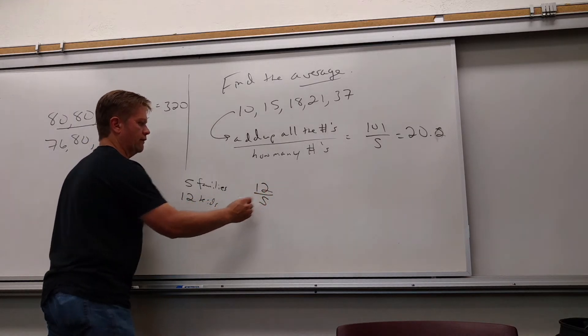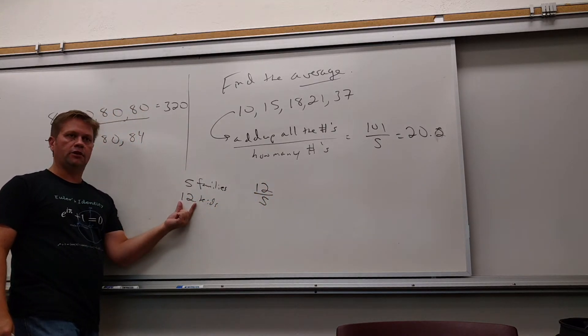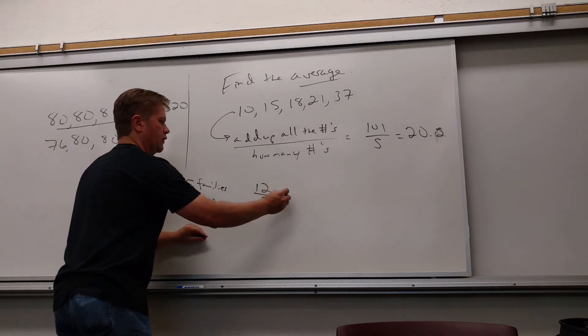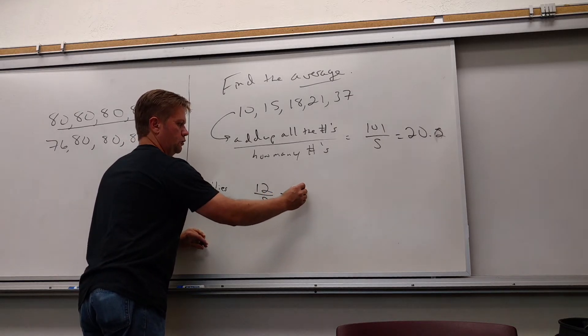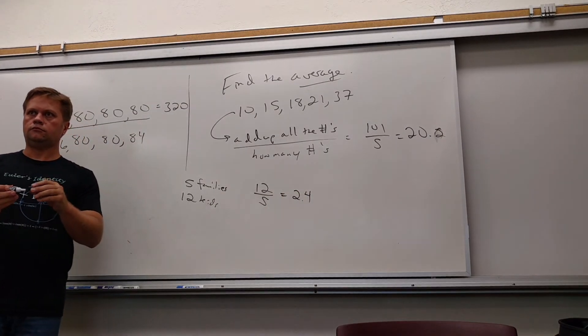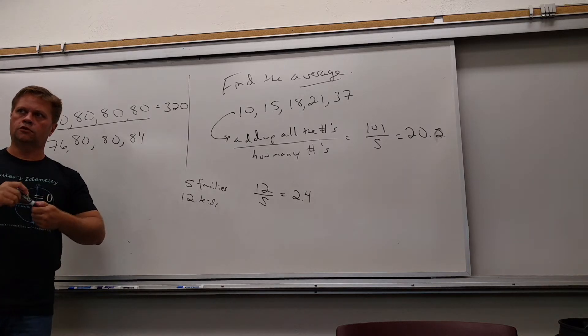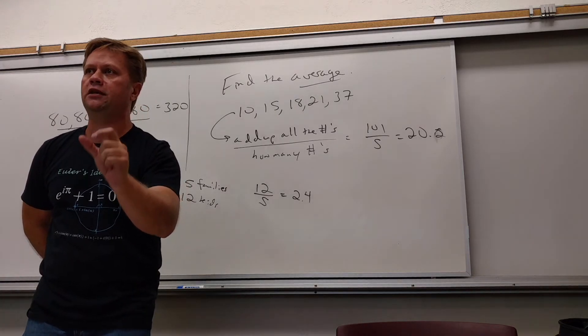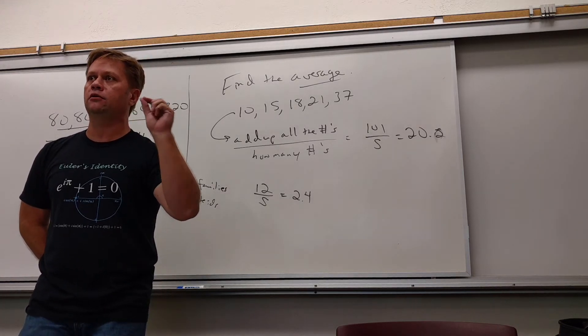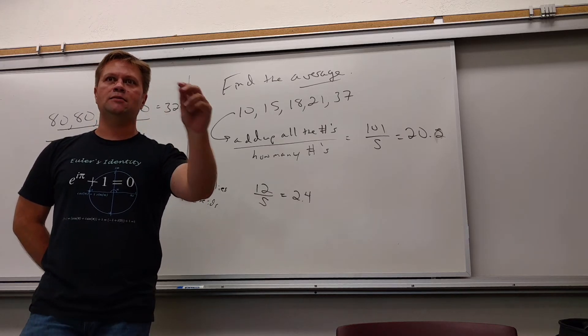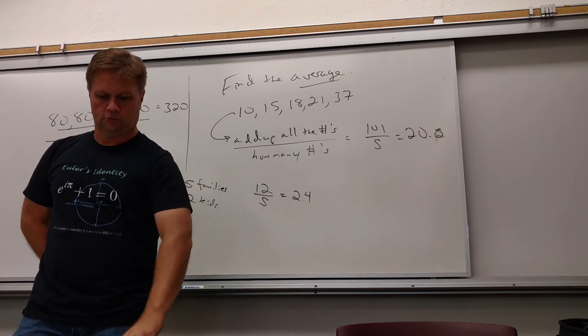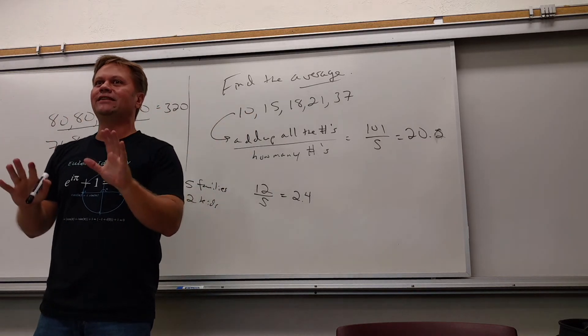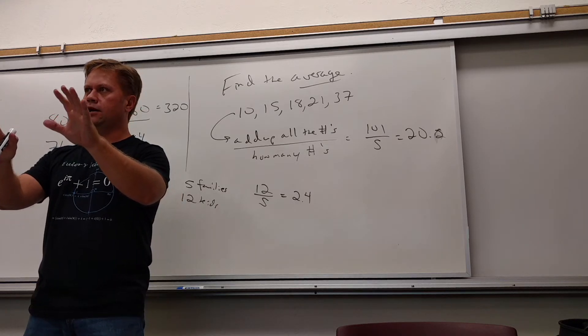Do you see why it doesn't have to come out to be a whole number? I know they each have a whole number of kids, but the average pretends as if everybody has the same exact number of kids. So if I do 12 divided by 5, is that cool? I already added up the number of kids for you. 12. And how many families are we talking about? Five. So 12 divided by 5 is 2.4.